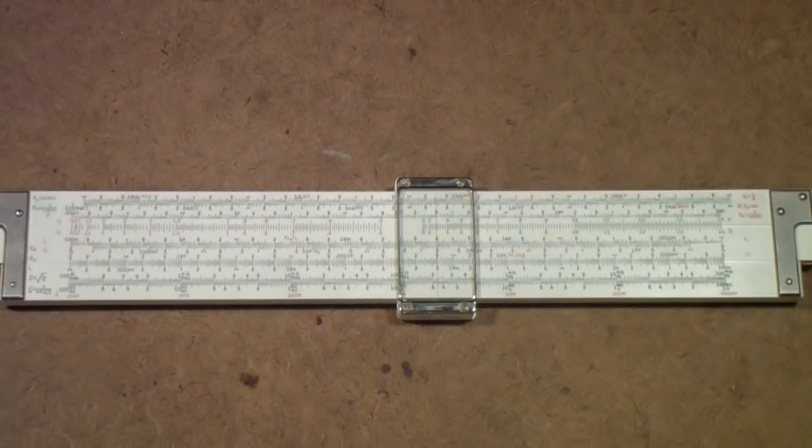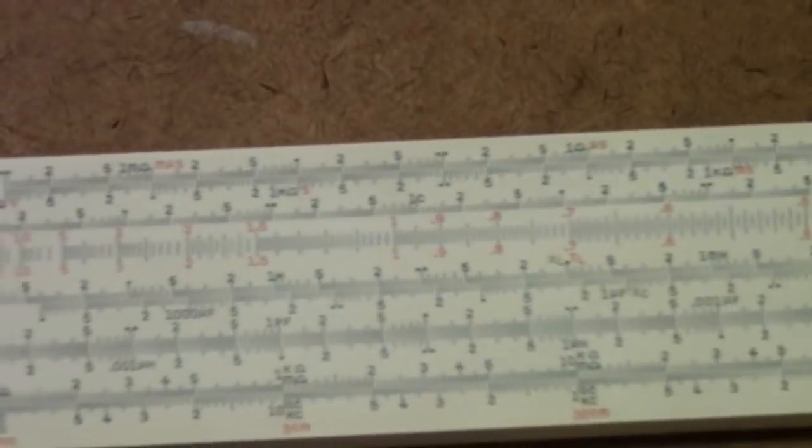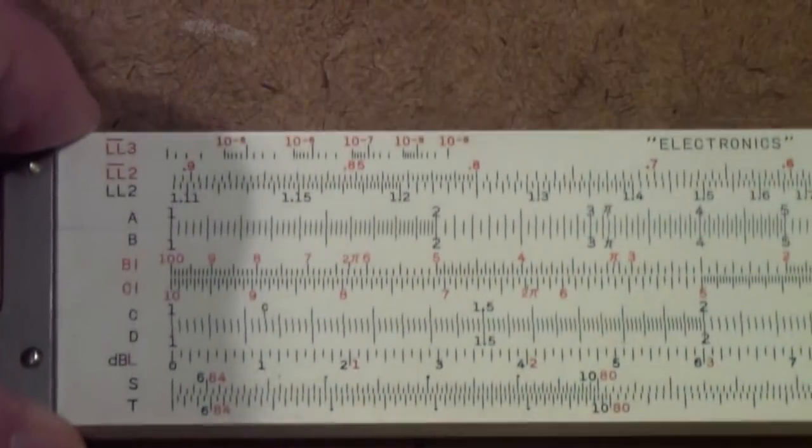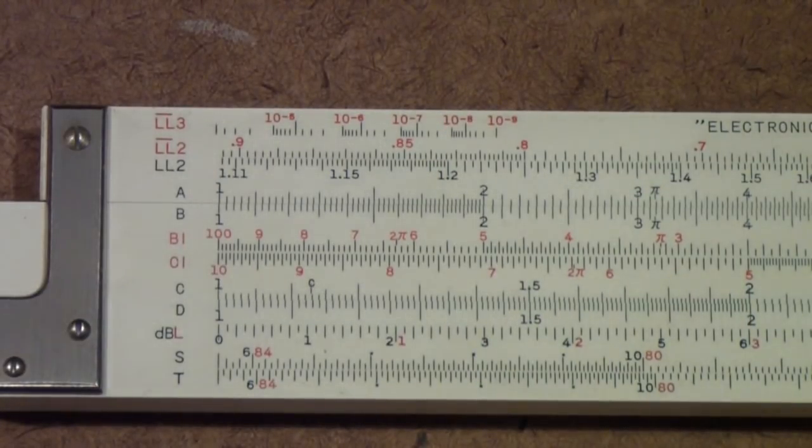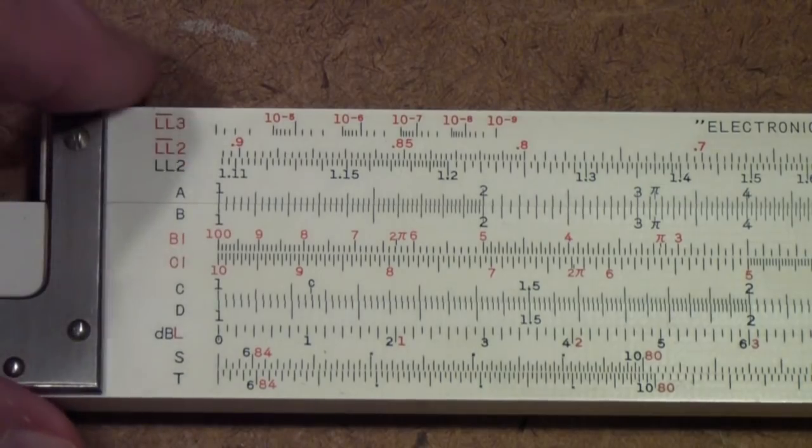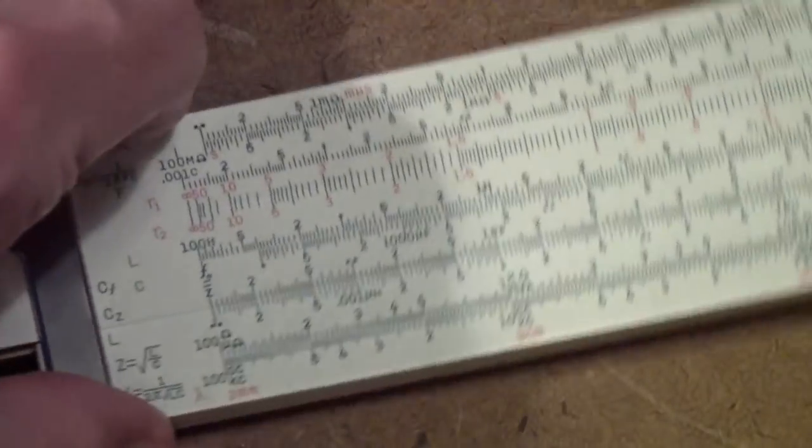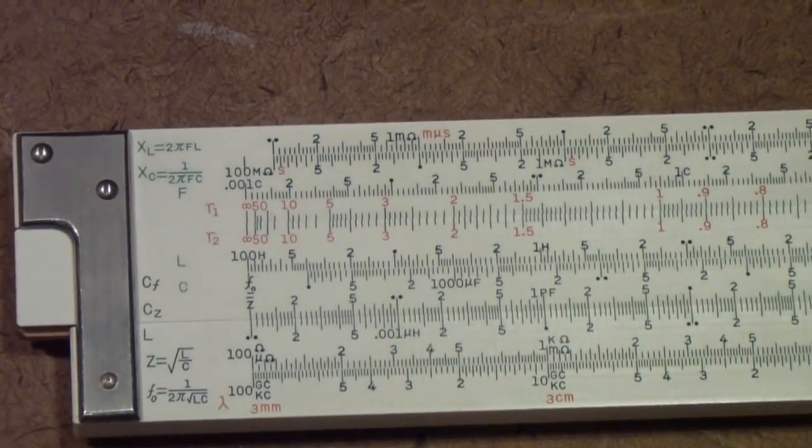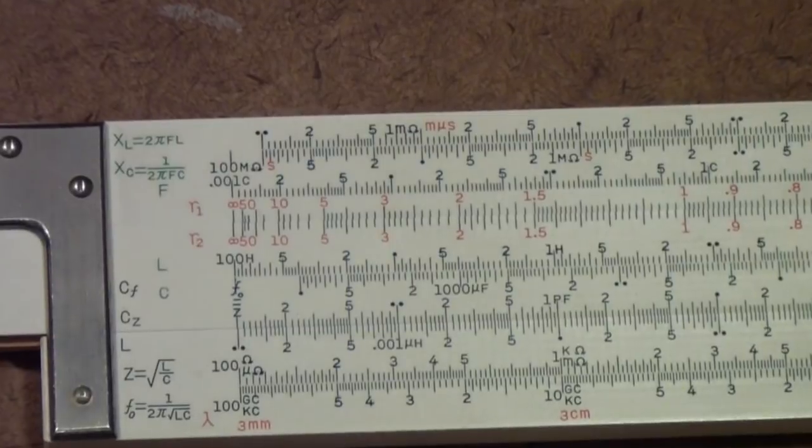I'm going to stick just to the electronic scales. Let me zoom in a little so you can see the rule a little better. I'm not going to be talking about the ordinary scales, log log and A, B, C, D, and so on. Instead I'm going to just concentrate on the electronic side.